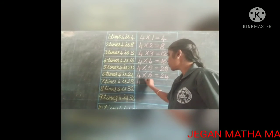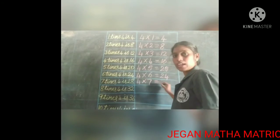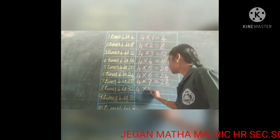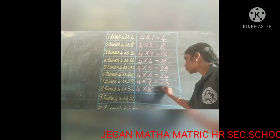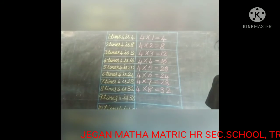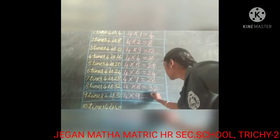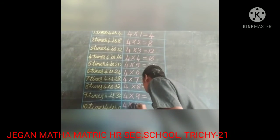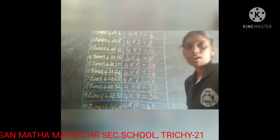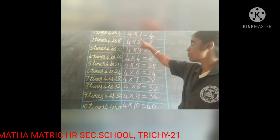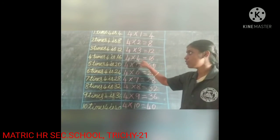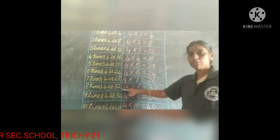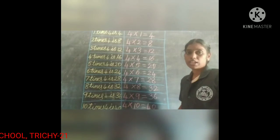Like that way you will write all. 4 threes are 12. 4 fours are 16. 4 fives are 20. 4 sixes are 24. 4 sevens are 28. 4 eights are 32. 4 nines are 36. 4 tens are 40. So we have to say: 4 ones are 4, 4 twos are 8, 4 threes are 12, 4 fours are 16, 4 fives are 20, 4 sixes are 24, 4 sevens are 28, 4 eights are 32, 4 nines are 36, 4 tens are 40.